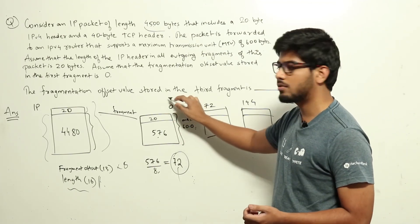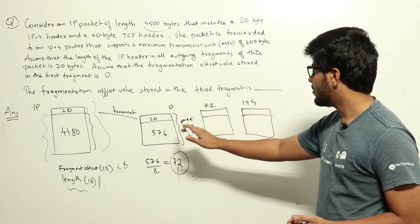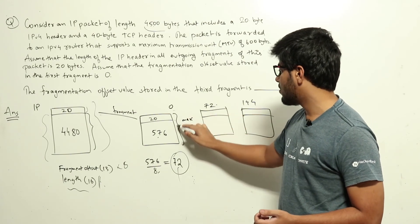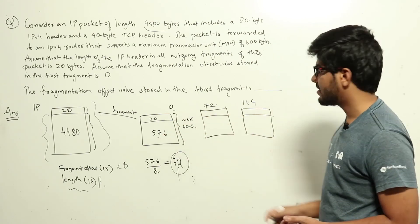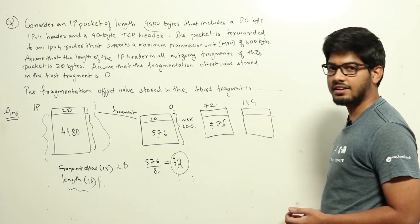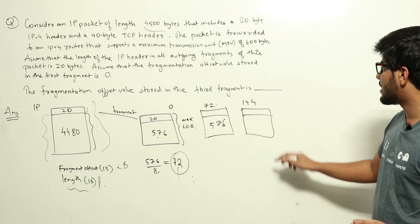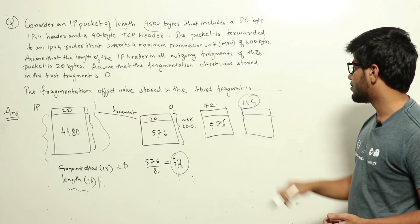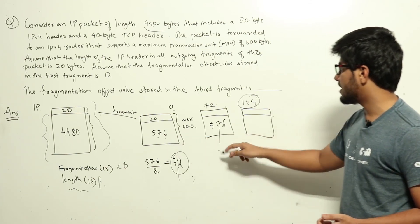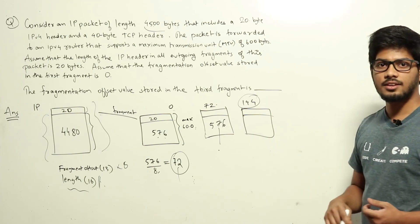The first fragment has a fragment offset of 0, and carries 576 bytes of data. The second fragment has a fragment offset of 72, indicating that 576 bytes have already been sent. The second fragment also carries 576 bytes of data. The third fragment therefore has a fragment offset of 72 plus 72 equals 144, indicating that a total of 576 plus 576 bytes have been sent in previous fragments. The answer is 144.